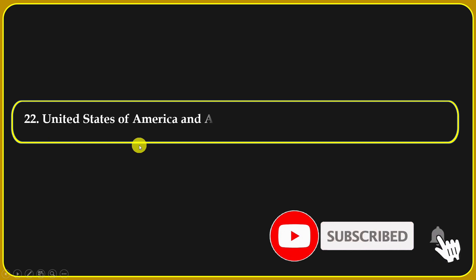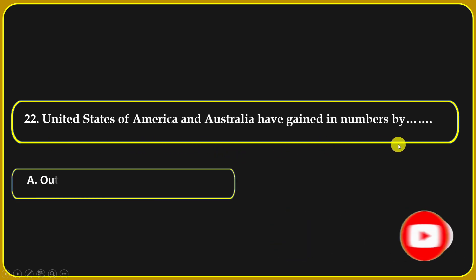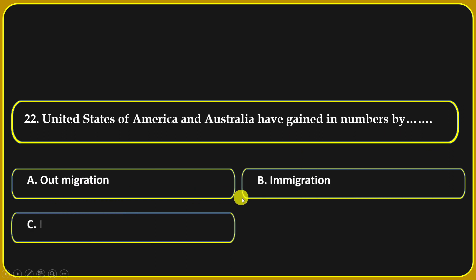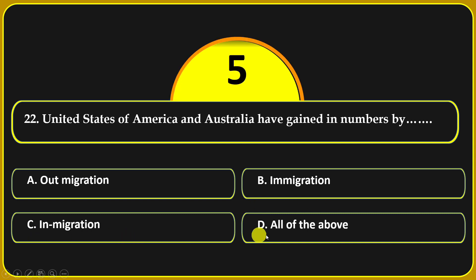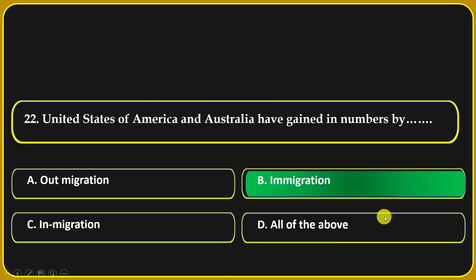United States of America and Australia have gained in numbers by: out-migration, immigration, in-migration, or all of the above. The correct answer is immigration.